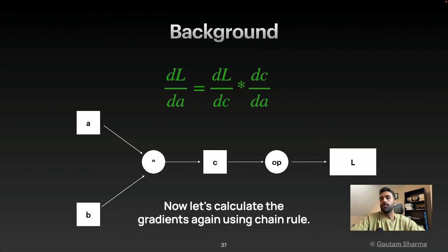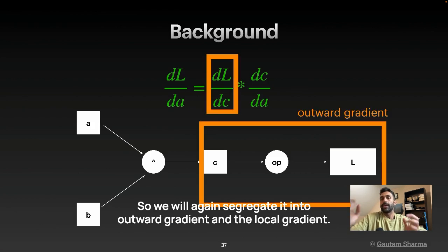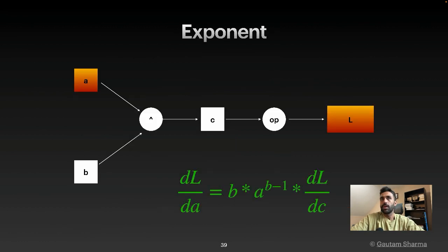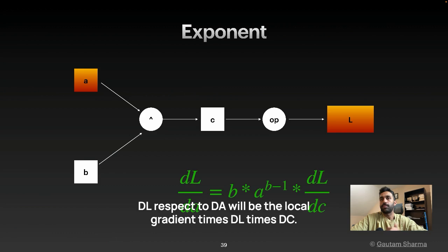Now let's calculate the gradients again using chain rule. So we will again segregate it into outward gradient and the local gradient. We just calculated the local gradient as B times A raised to power B minus 1. And again, if we use the chain rule, DL with respect to DA will be the local gradient times DL times DC.